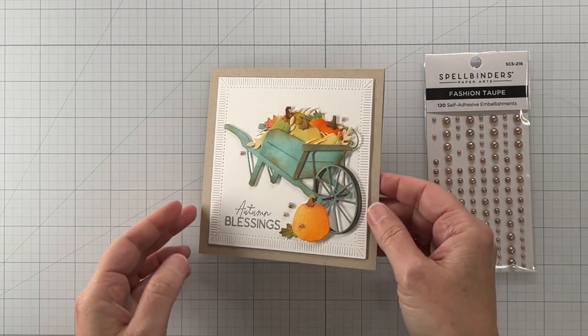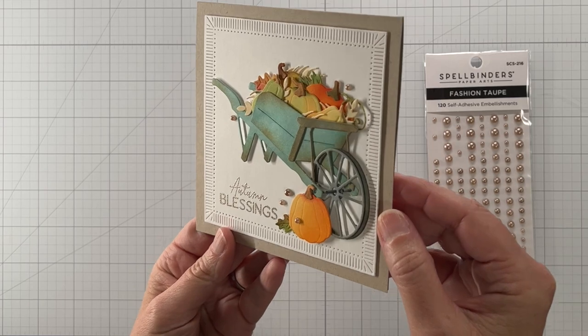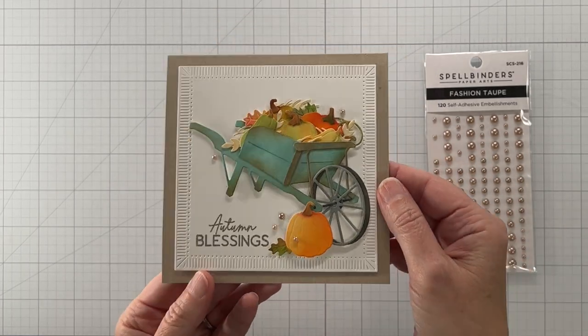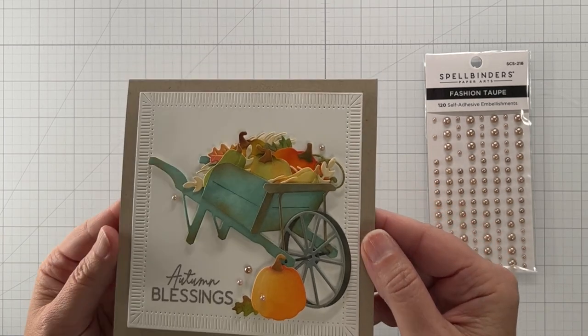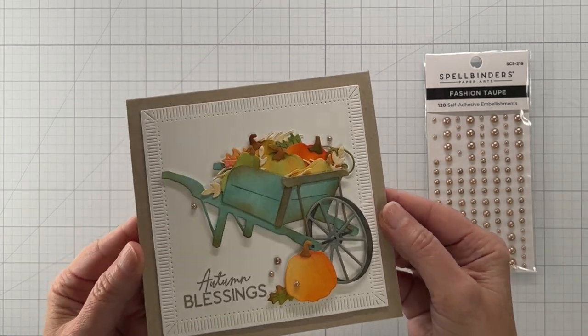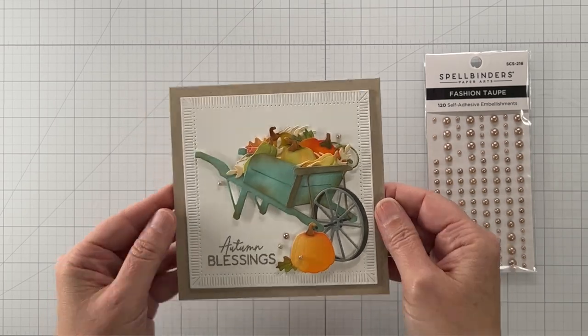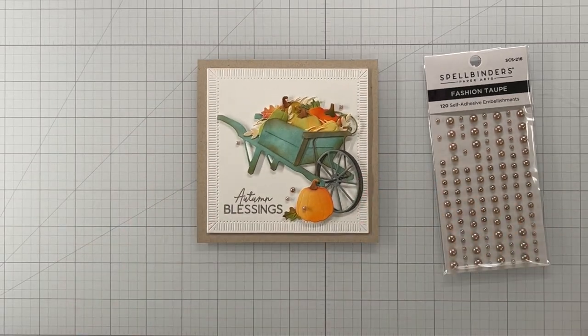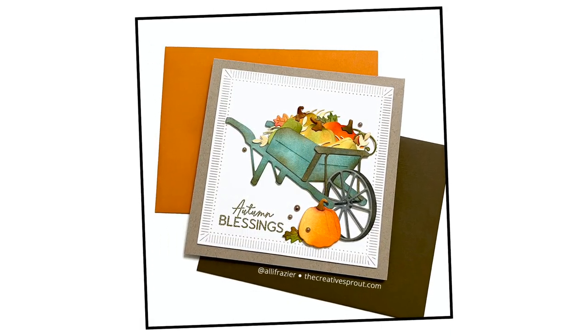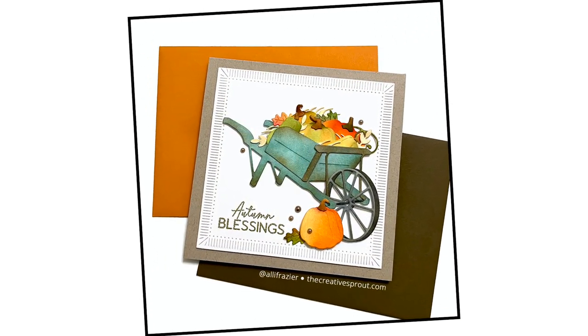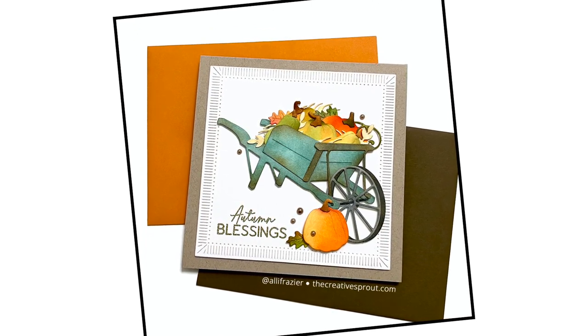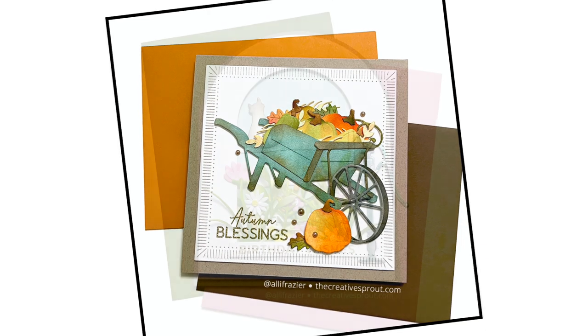Now these are taupe gems and they match really well with this embossing powder that I use, liquid platinum from Ranger. I think these are really good gems to use with cards that have craft paper on them. Spellbinders has so many gems in their store now. So here's the finished card and I really love it, I think it's gonna be perfect for Thanksgiving.